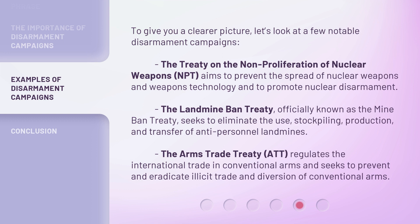The Arms Trade Treaty, ATT, regulates the international trade in conventional arms and seeks to prevent and eradicate illicit trade and diversion of conventional arms.